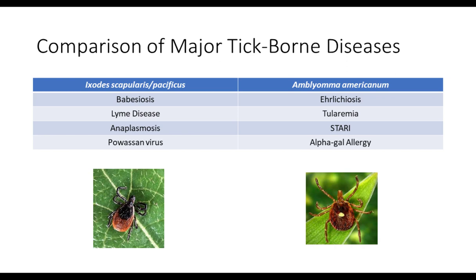If we compare the major tick-borne diseases carried by Ixodes and Amblyoma, they are quite different. With Ixodes, we're worried primarily about babesiosis, Lyme disease, anaplasmosis, and Powassan virus. Amblyoma, on the other hand, carries ehrlichiosis, tularemia, STARI, and alpha-gal allergy.